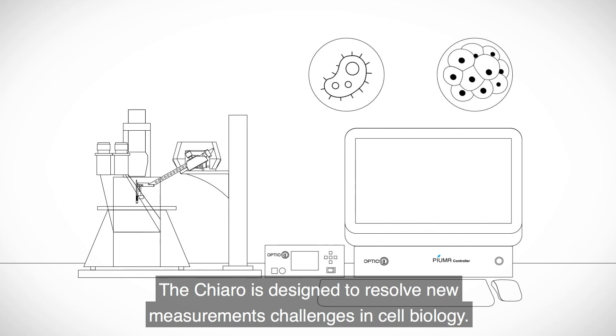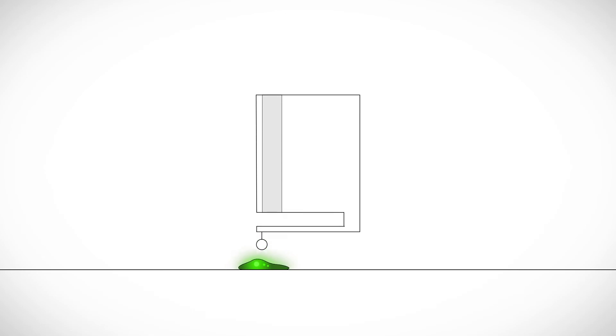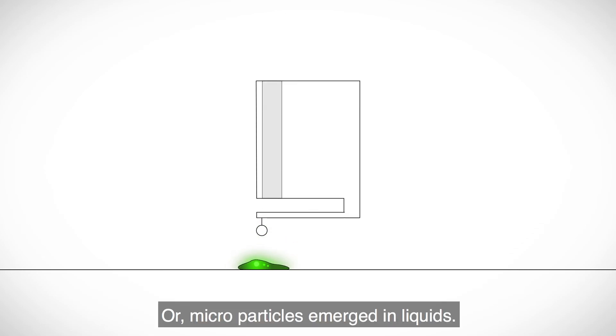The Chiaro is designed to resolve new measurement challenges in cell biology. For instance, to determine the viscoelastic properties of living cells in a non-destructive way, or microparticles immersed in liquids.